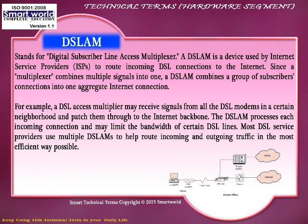The DSLAM processes each incoming connection and may limit the bandwidth of certain DSL lines — it can control how much speed is passed through. Most DSL service providers use multiple DSLAMs to help route incoming and outgoing traffic in the most efficient way possible.